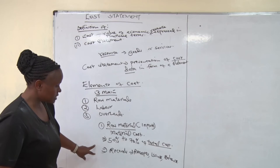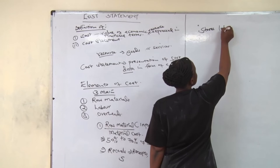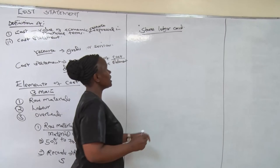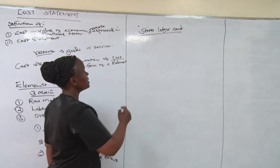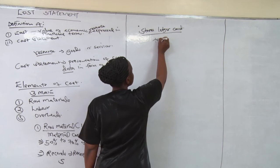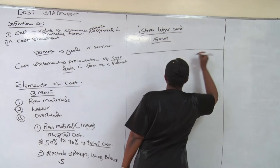When you are recording these materials, we have a book which we call the store ledger. The stores accountant has to prepare a store ledger to record the materials they receive, the materials they issue, and the ones which remain in the store. In this store ledger, you must write the raw materials which you are purchasing, and you have columns which you indicate.